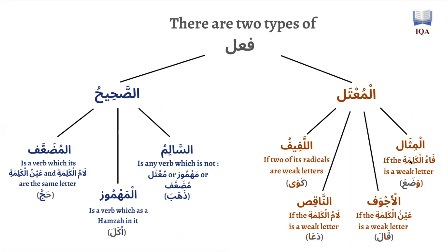Before we understand that, we need to go over again the two different types of verbs in the Arabic language. There are verbs that are sahih and there are verbs that are mu'atal. Verbs that are sahih are verbs that don't have any of the weak letters — the alif, the waw, and the ya — inside. Any verb that does not have any of those three letters is called sahih, and there are subgroups for them.